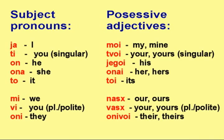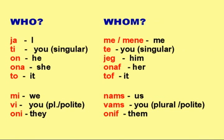Subject pronouns: MOJ, MOJ, TVOJ, JEGOJ, ONAJ, TOJ, NAŠ, VAŠ, ONIVOJ. Personal pronouns: JA, TI, ON, ONA, TO, MI, VI, ONI. Object forms: HOJ, ME, MENE, TE, MIJEG, ONAF, TOF, NAMS, VAMS, ONIF.